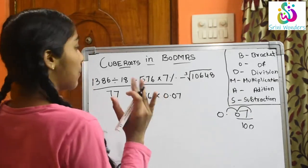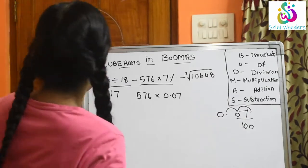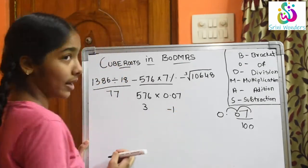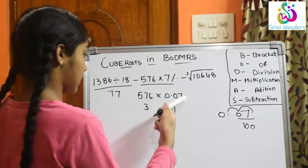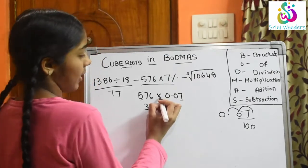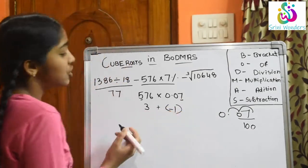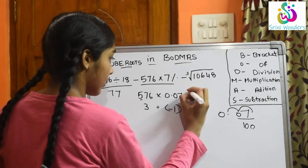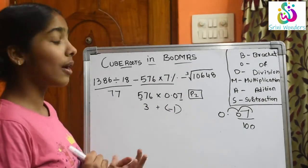Now first we will find the position, to place our answer. Here the position of 5 in 576 is 3, and the position of 7 in 0.07 is minus 1 — we won't count the zero. Multiplication is repeated addition, so we take 3 plus minus 1, that is P2. So our position is P2 and we place our answer from P2 position.